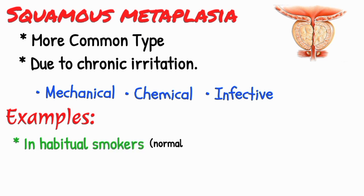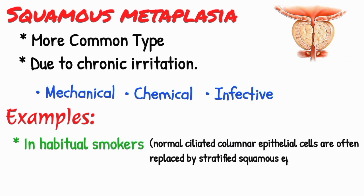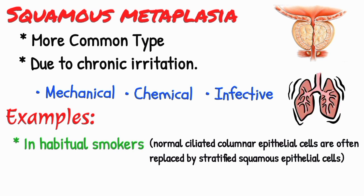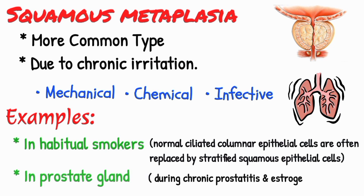In habitual smokers, the normal ciliated columnar epithelial cells of the trachea and bronchi are often replaced by stratified squamous epithelial cells. And in the prostate gland, in chronic prostatitis and estrogen therapy.